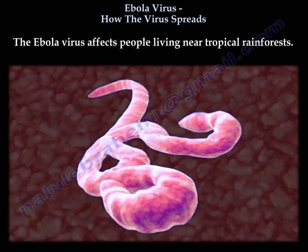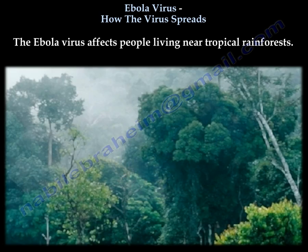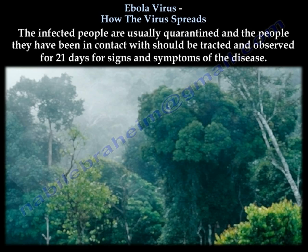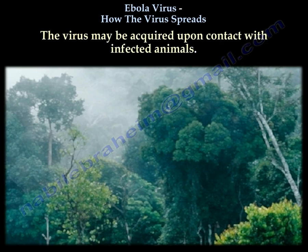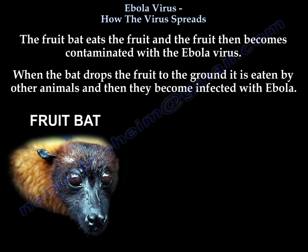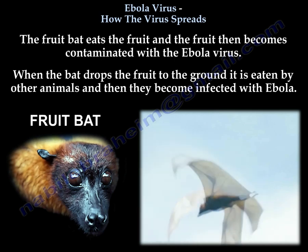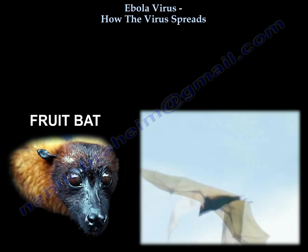The Ebola virus affects people living near tropical rainforests. Infected people are usually quarantined, and the people they have been in contact with should be tracked and observed for 21 days for signs and symptoms of the disease. The virus may be acquired upon contact with infected animals. The fruit bat eats fruit, and the fruit then becomes contaminated with the Ebola virus when the bat drops it to the ground, where it is eaten by other animals, which then become infected.